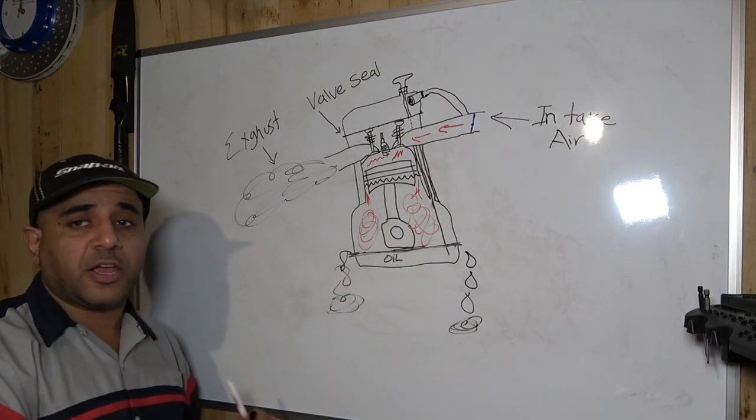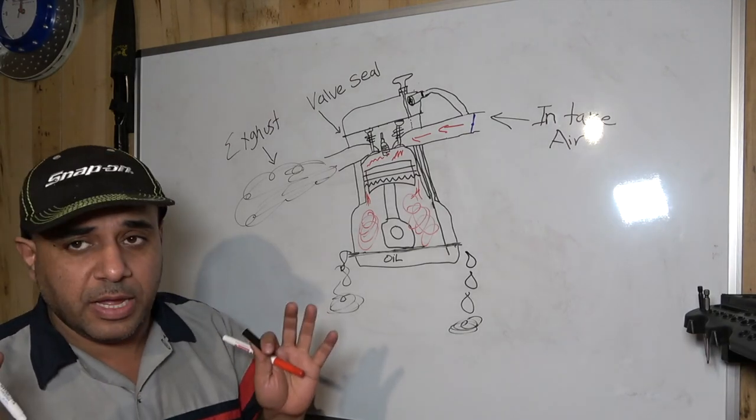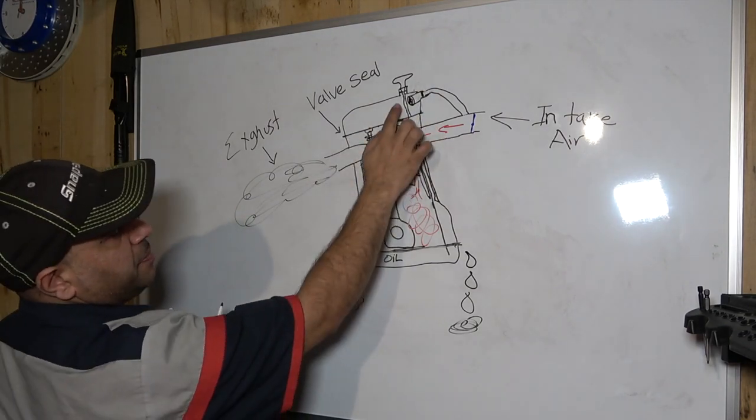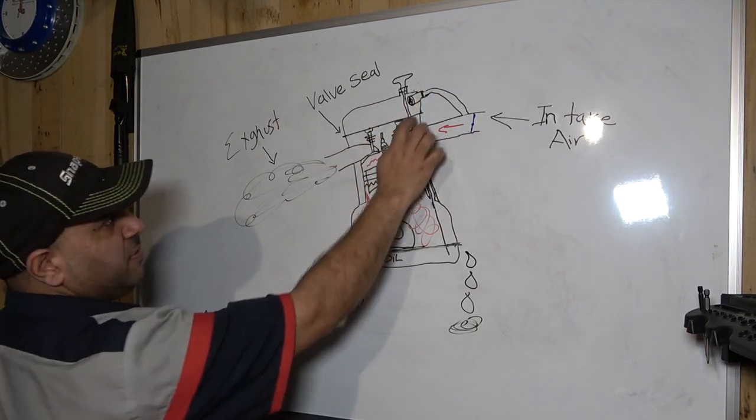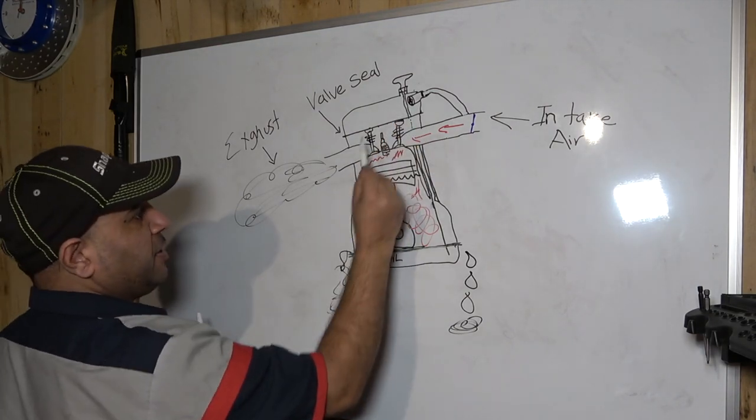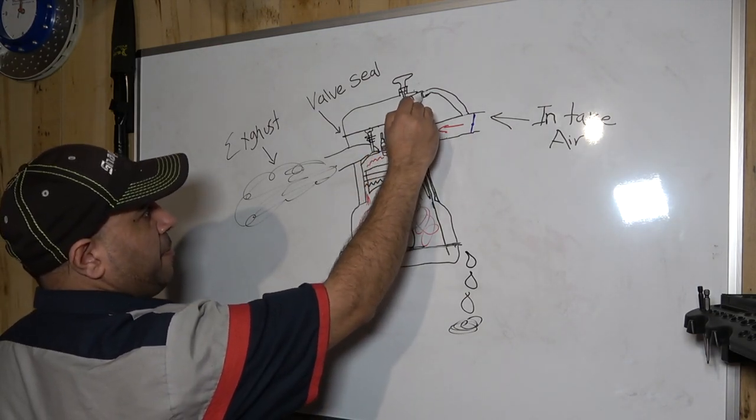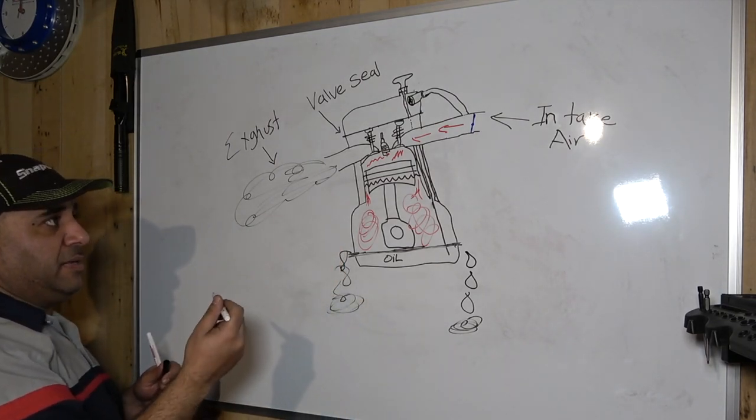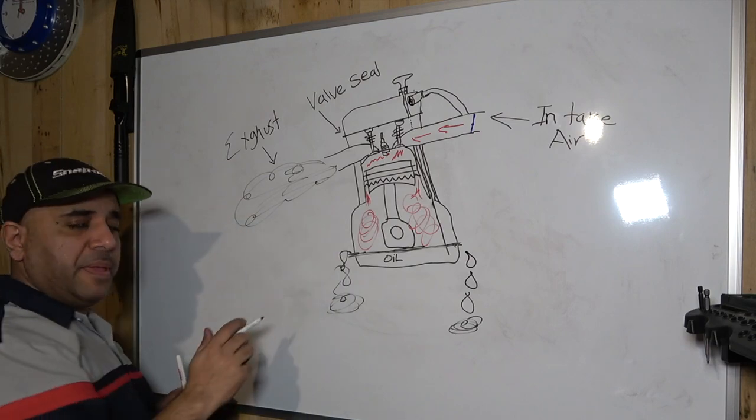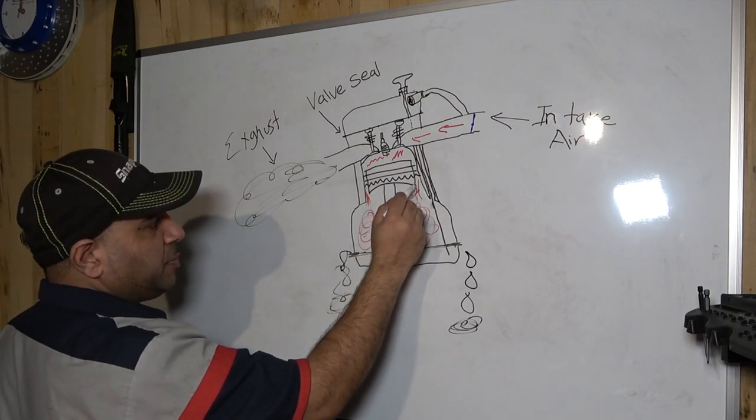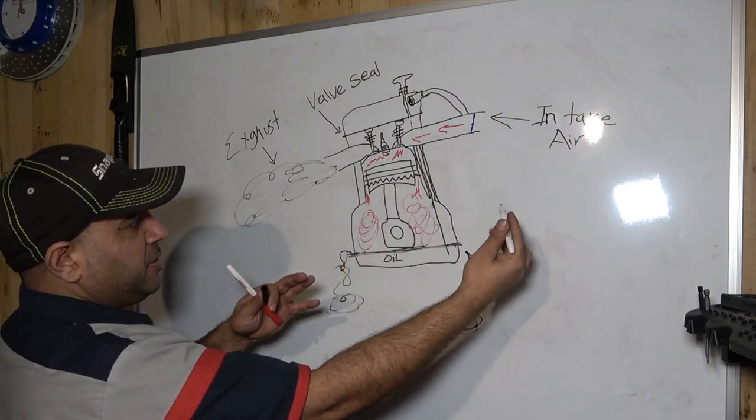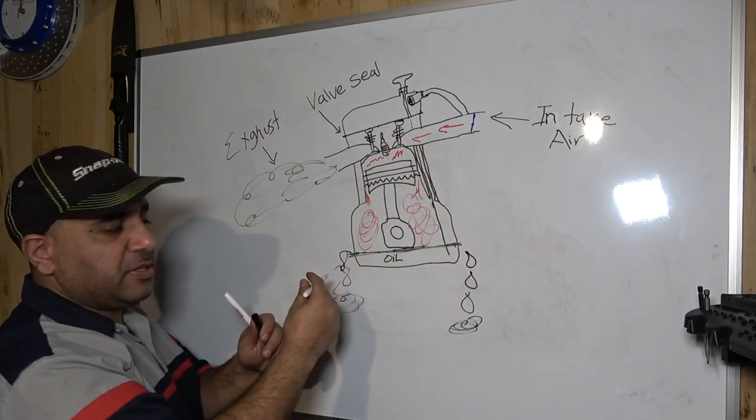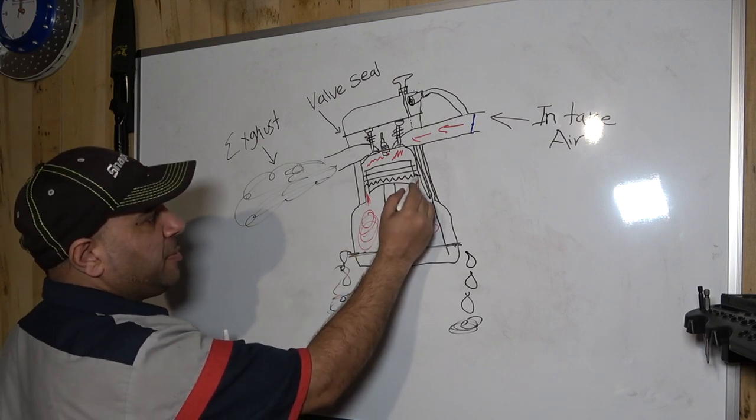Another thing that can occur - if your PCV valve up here is jammed up, it's blocked, it's clogged because you failed to replace it, all these pressures build up in there. If another piston would be in a compression stroke and then in a power stroke, with the blow-by some of the oil is gonna seep up in here.